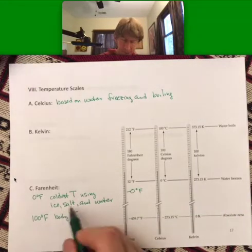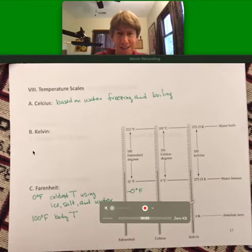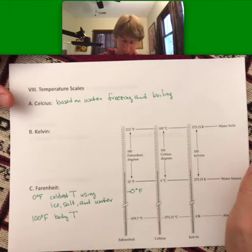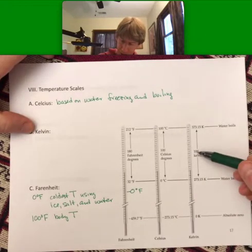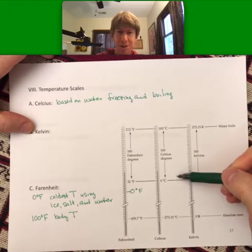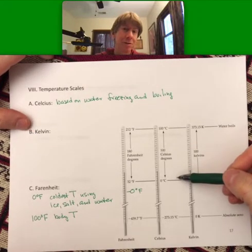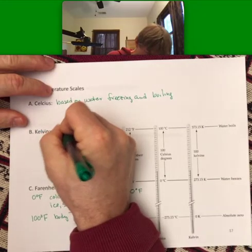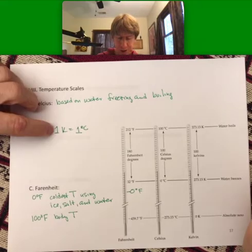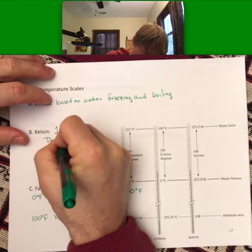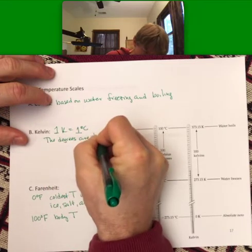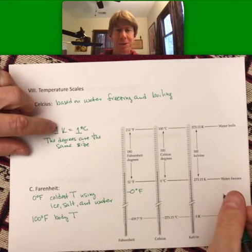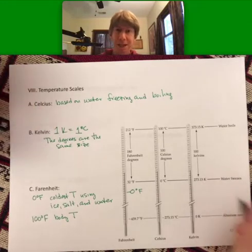Fahrenheit is mostly only used in the United States and is not used in scientific measurements at all. Now Kelvin: 100 Kelvins is also 100 Celsius degrees — one Kelvin equals one degree Celsius; the degrees are the same size. Note that Kelvin has no degree symbol, so please just write Kelvin and not degree Kelvin.